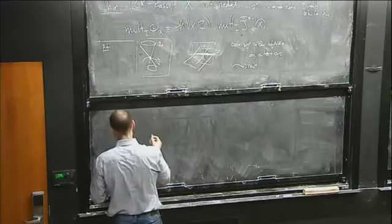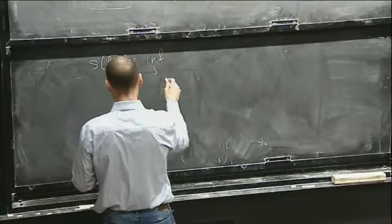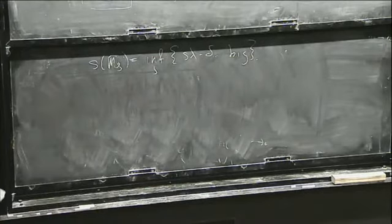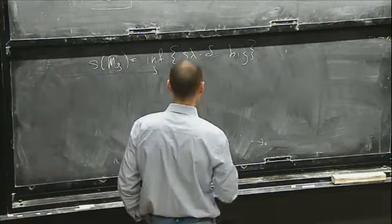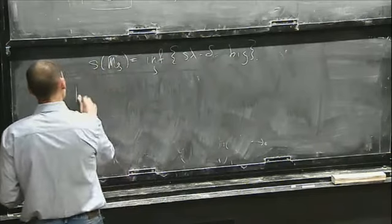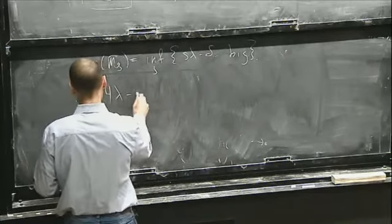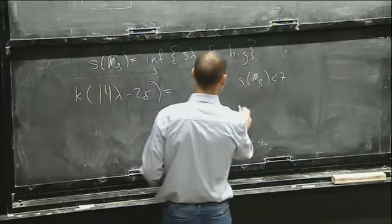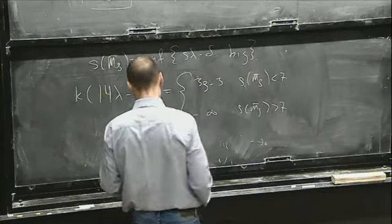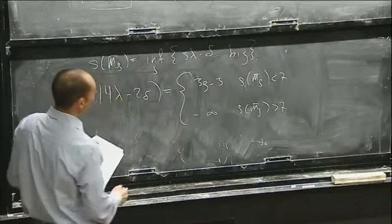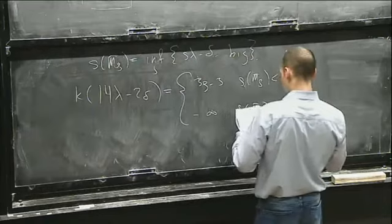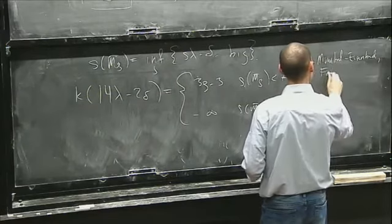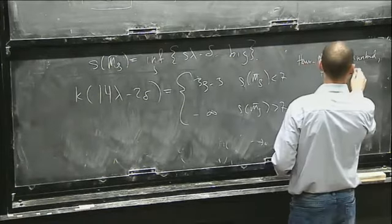The slope s(M_g-bar) is the infimum over all s such that s*lambda minus delta is big. Lambda is known to be big, and you're figuring out how much you can take away and it's still big. The Kodaira dimension of 14 lambda minus 2 delta equals 3g minus 3 if the slope of M_g-bar is less than 7, and minus infinity if the slope is greater than 7. Work of Harris, Mumford, Eisenbud, Farkas, and Farkas-Popa-Verra answers this question for us already.